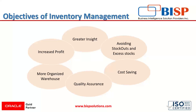Cost saving is another main objective — it helps in optimizing various costs included in inventory, like purchase cost, carrying cost, storage cost and so on. Regarding quality assurance, in order to ensure the quality of goods at a reasonable price and to minimize loss due to wastage and damages, accurate and proper inventory management is required.